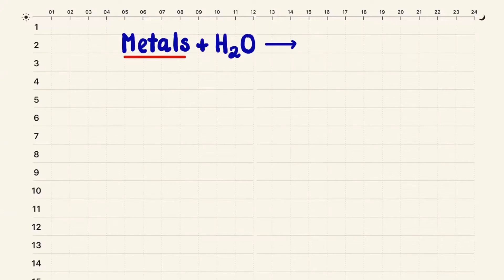Welcome to my channel and welcome all chemistry class students. Today I'm going to be talking about metal reacts with water. Before that, we have to know what metals are. A metal is a solid material which is technically hard, shiny, malleable, fusible, and ductile with good electrical and thermal conductivity. For example: iron, gold, silver, aluminum, and alloys such as steel.